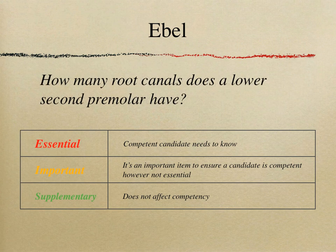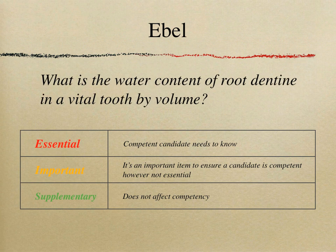Consider this item: 'How many root canals does a lower second premolar have?' Is this essential, important, or supplementary? If a dental graduate doesn't know the number of root canals in a lower second premolar, they might remove slightly more tooth tissue — not ideal but not really a safety issue. I personally would categorize this as important, not essential — though you can argue and decide as a panel.